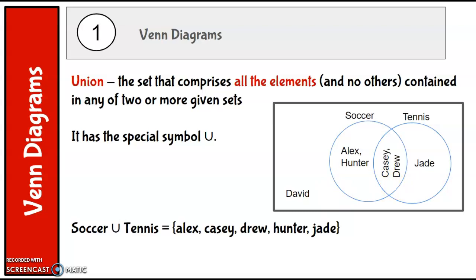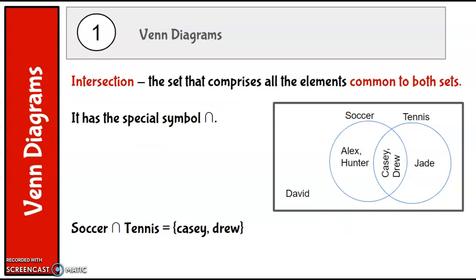Which brings us to the idea of an intersection. That's the set that comprises all the elements common to both sets, and it has the special symbol that kind of looks like an upside-down U.